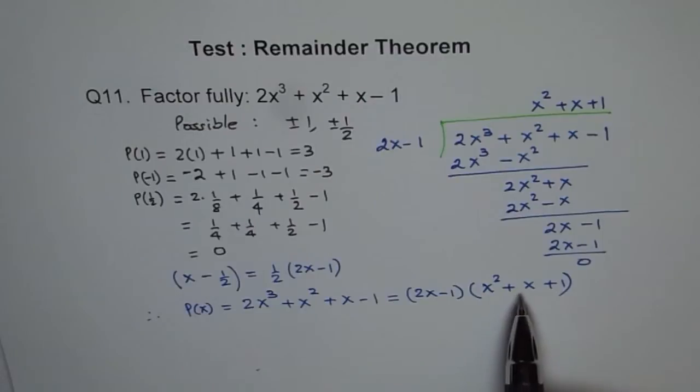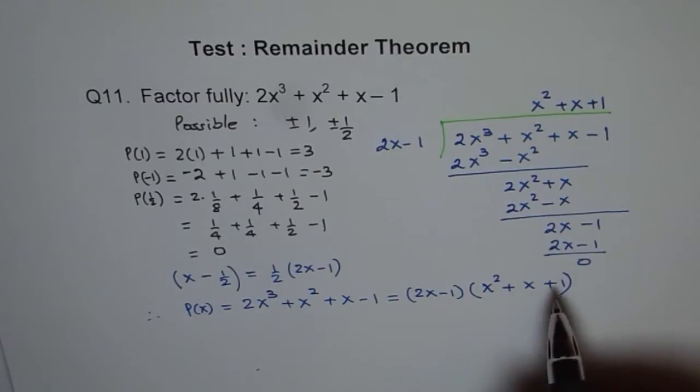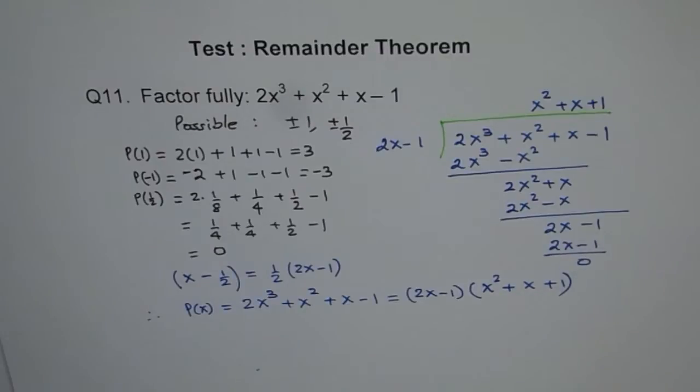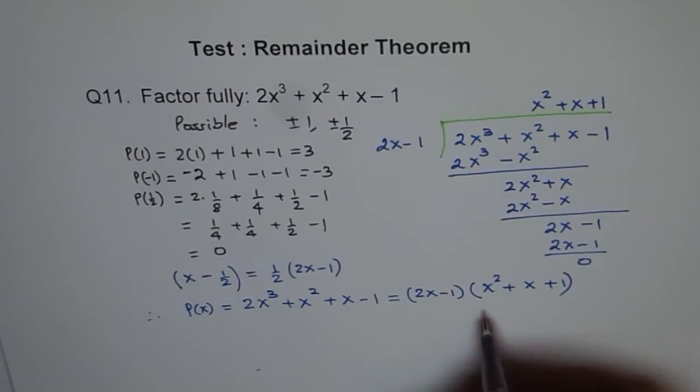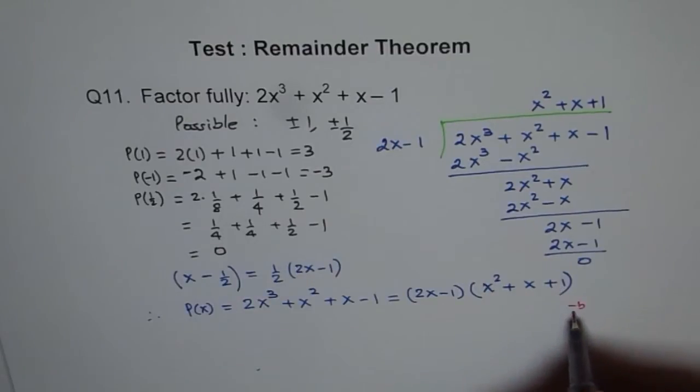So minus b, b² - 4 is here. So b² is 1 and 4 times ac will not give us a real root. If we use quadratic formula for x² + x, where a is 1, b is 1 and c is also 1, we get -b ± √(b² - 4ac) over 2a.